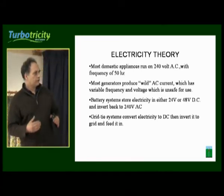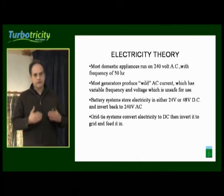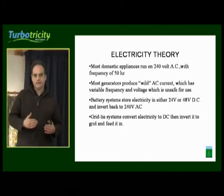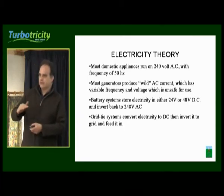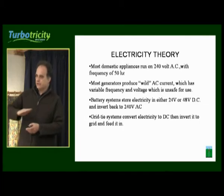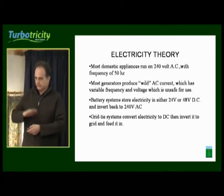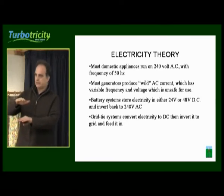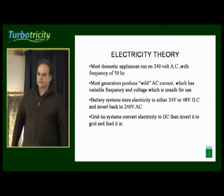What we always do is convert that electricity to direct current. You rectify it by putting it through a series of diodes, and those diodes only allow the electricity to flow one way, so you trap both sides of the electricity to positive and negative, separating the alternating current into direct current, which you can store in batteries.